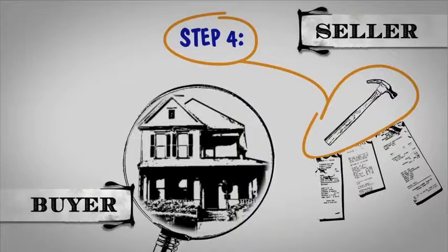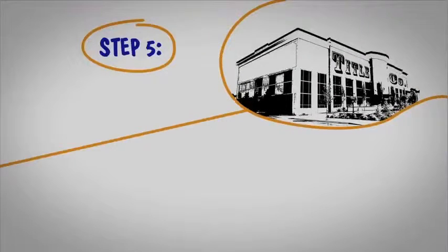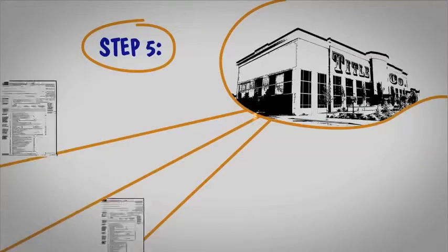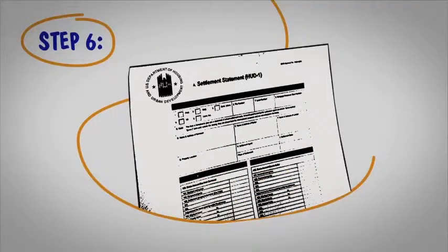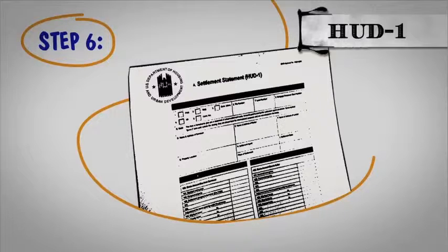Step 5. The title company will collect all the necessary documents. And finally, Step 6. When we close, we'll work from a document known as a HUD-1 settlement statement. The HUD-1 tells you the charges associated with the purchase of your home.